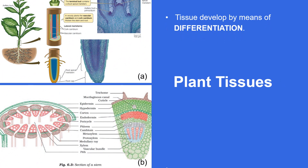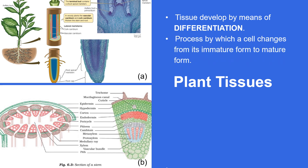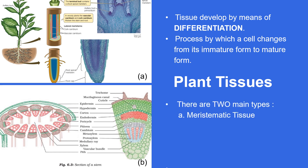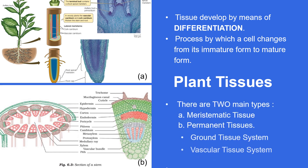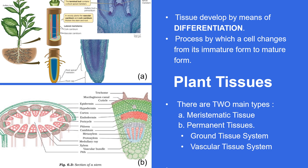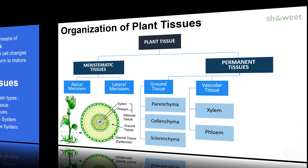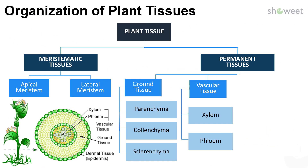Tissue is developed by means of differentiation, a process by which a cell changes from its immature form to mature form. There are two main types: meristematic tissue and permanent tissues. Permanent tissues are divided into ground tissue and vascular tissue systems. Meristematic tissues are divided into apical and lateral meristem, while ground tissues include parenchyma, collenchyma, and sclerenchyma, and vascular tissues are divided into xylem and phloem.